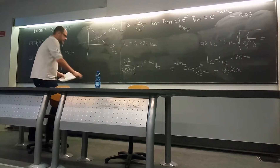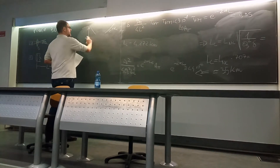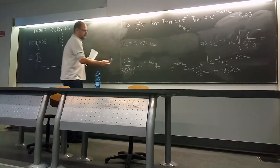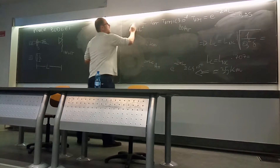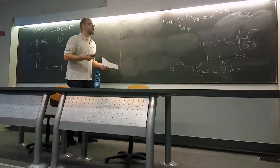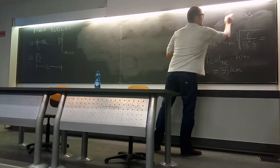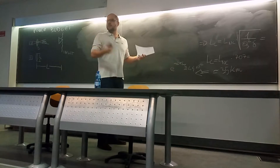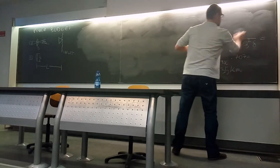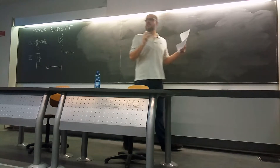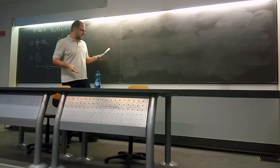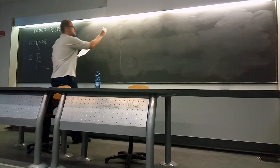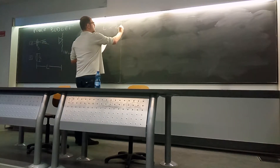Now let's try to understand how difficult it was for researchers to measure the distance between Earth and Moon. You can also think of this as proof that humans went to the Moon, because during the Apollo missions we placed three corner cubes on the lunar surface and then used them to measure the Earth-Moon distance.